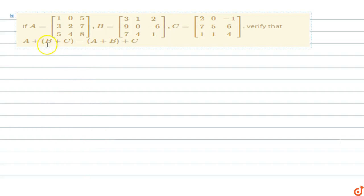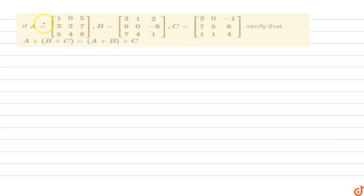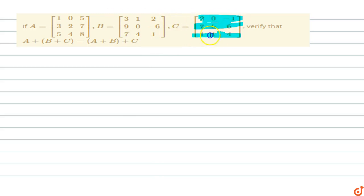In this question we have to verify that A plus B plus C equals A plus B plus C. Matrix A is 1 0 5 / 3 2 7 / 5 4 8, matrix B is 3 1 2 / 9 0 -6 / 7 4 1, and matrix C is 2 0 -1 / 7 5 6 / 1 1 4. We have to verify that (A + B) + C equals A + (B + C).